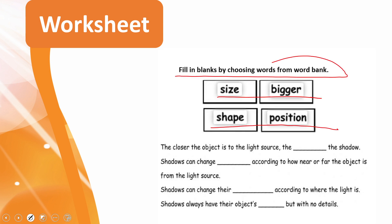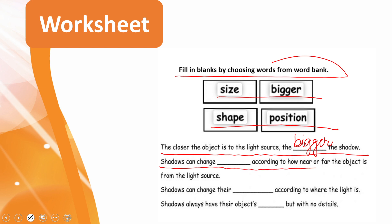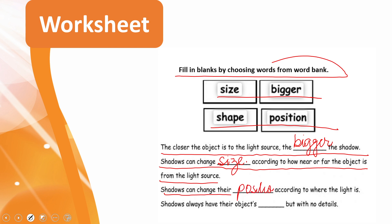Fill in the blanks using the words: size, bigger, shape, position. 'The closer the object is to the light source, the bigger the shadow will be.' Shadows can change size. Shadows can change their shape according to where the light is. Shadows also always have the same shape as their object, but with no details.